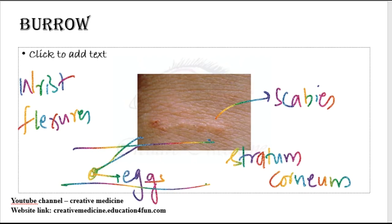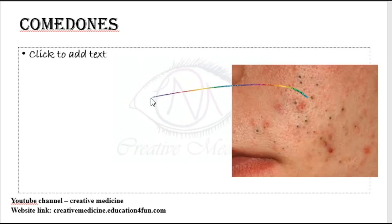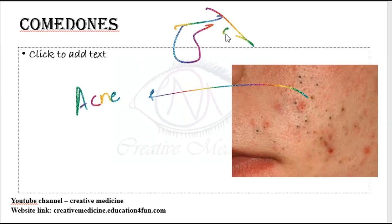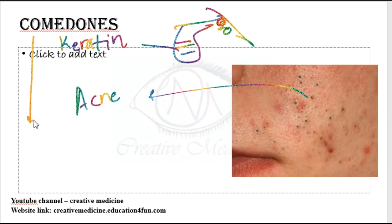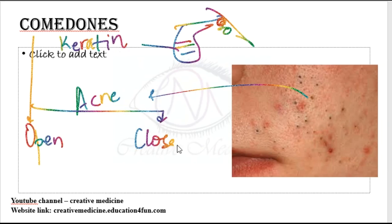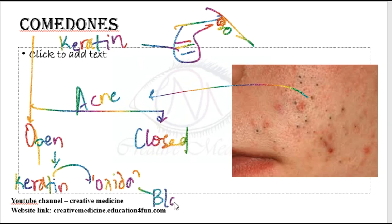Comedones. Comedones are mainly seen in acne. Comedones are actually dilated pilosebaceous ducts which are filled with keratin. Comedones can be of two types: open comedones or closed comedones. Open comedones have keratin and this keratin turns black due to oxidation, so you will see these open comedones as black structures. Closed comedones appear mainly white.